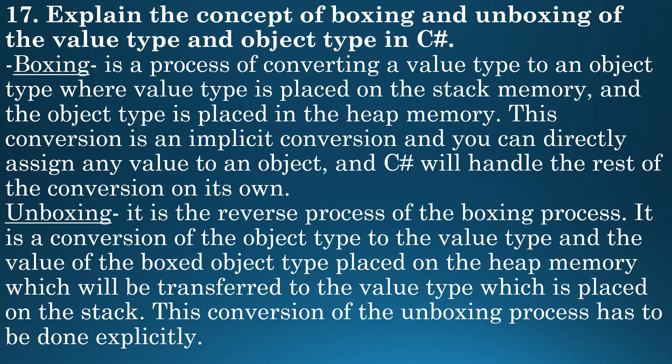Next question: explain the concept of boxing and unboxing of the value type and object type in C-Sharp. Boxing is a process of converting a value type to an object type, where a value is placed on the stack memory and the object type is placed in the heap memory. This conversion is an implicit conversion and you can directly assign any value to an object and C-Sharp will handle the rest. Unboxing is the reverse process — the conversion of the object type to the value type, where the value of the boxed object placed on the heap memory is transferred to the value type on the stack. This conversion must be done explicitly.